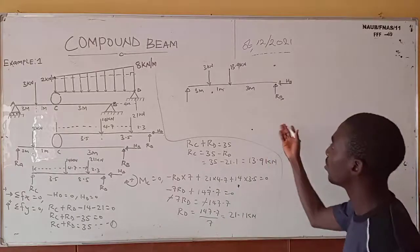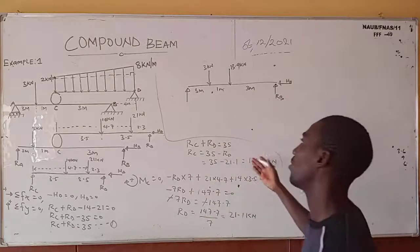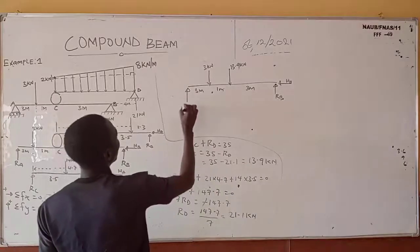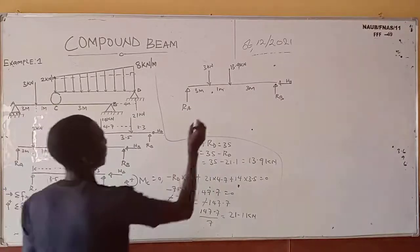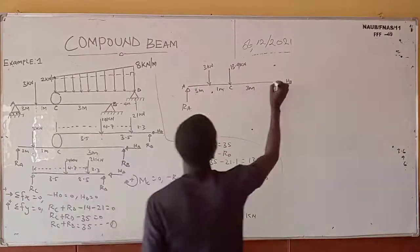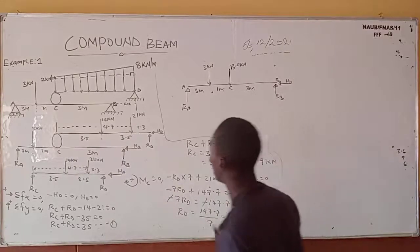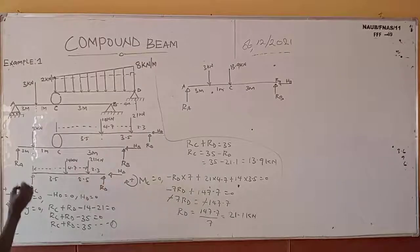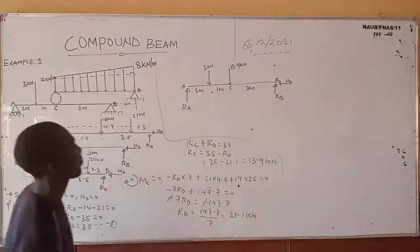Now we follow the same steps as before. This beam has supports labeled: A on the left and D on the right, with C being the internal hinge location. Taking summation of horizontal forces equals zero: minus HB equals zero, so HB equals zero.